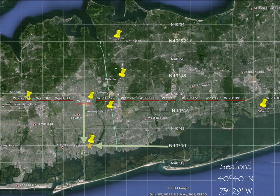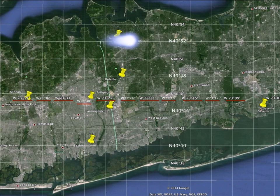73 degrees 24 minutes, 73 degrees 27 minutes, and so on. So make sure on a map you don't mix that up, because it's easy to think that as we go to the left the numbers are going to get smaller. Our next location is Huntington, New York.